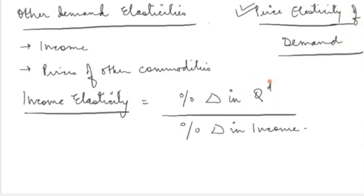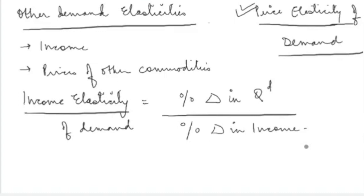That has to be clear. When we talk about price elasticity of demand, it is percentage change in quantity demanded with respect to percentage change in price. When we are talking about income elasticity of demand, then we are talking about percentage change in quantity demanded with respect to percentage change in income.